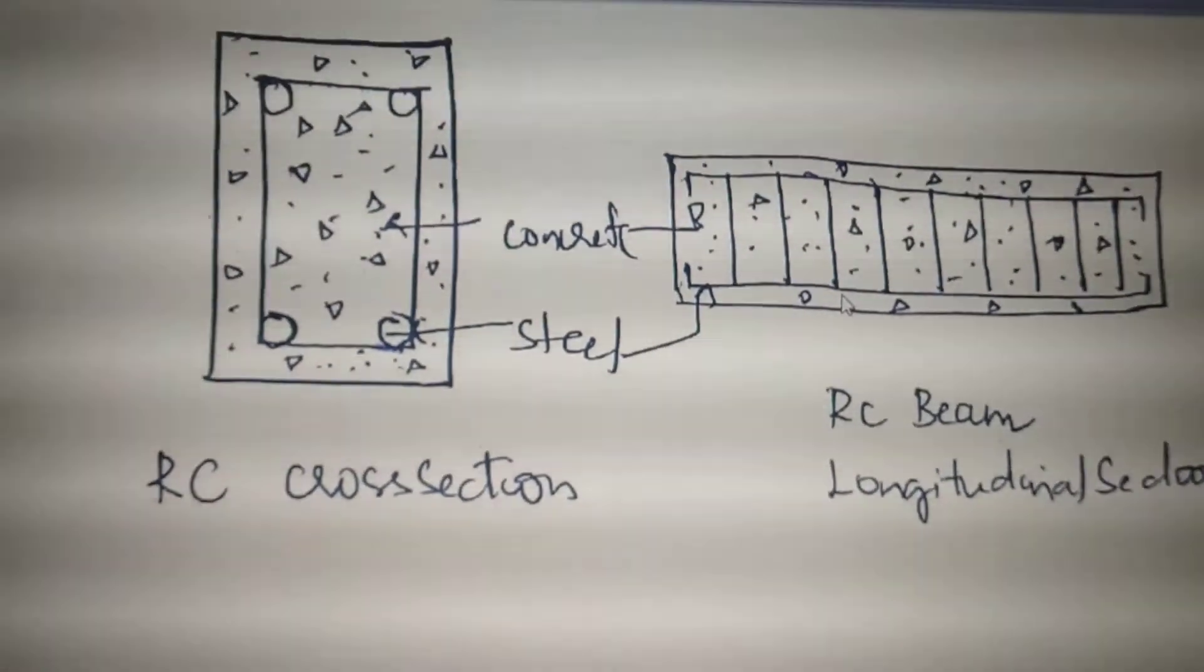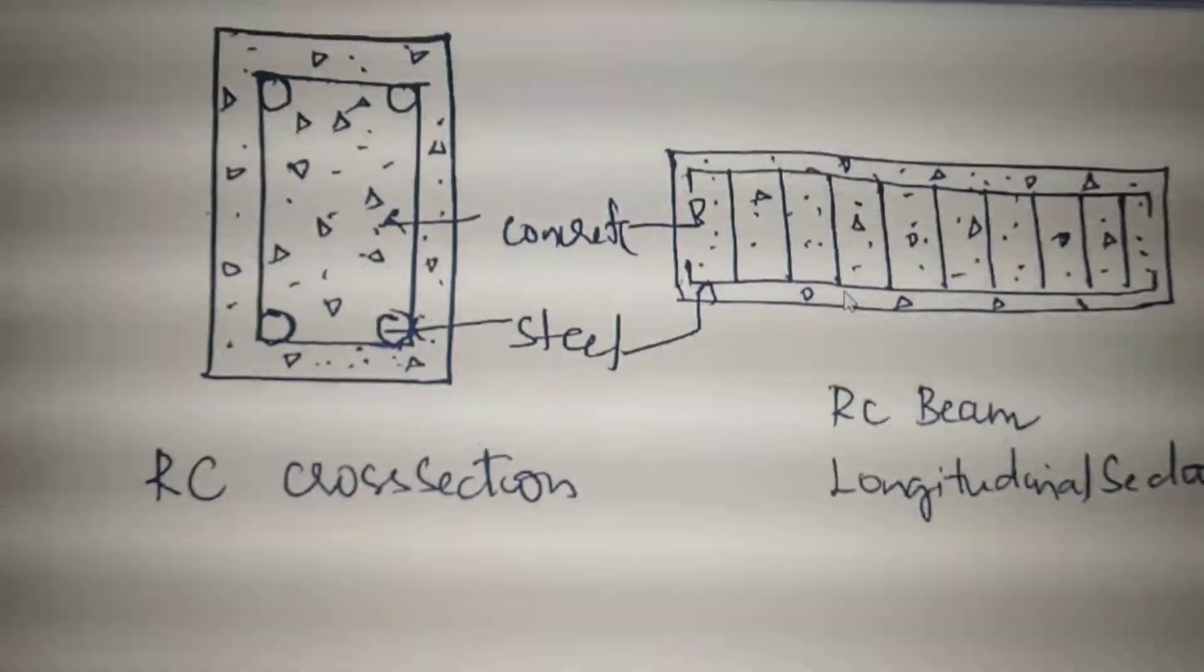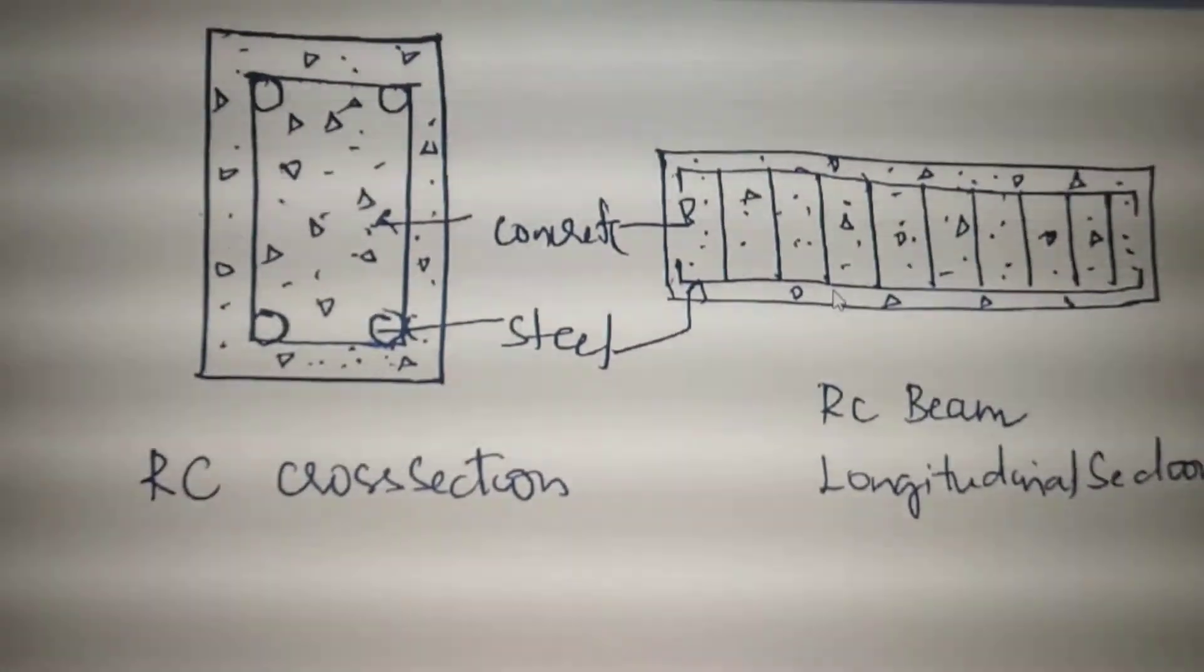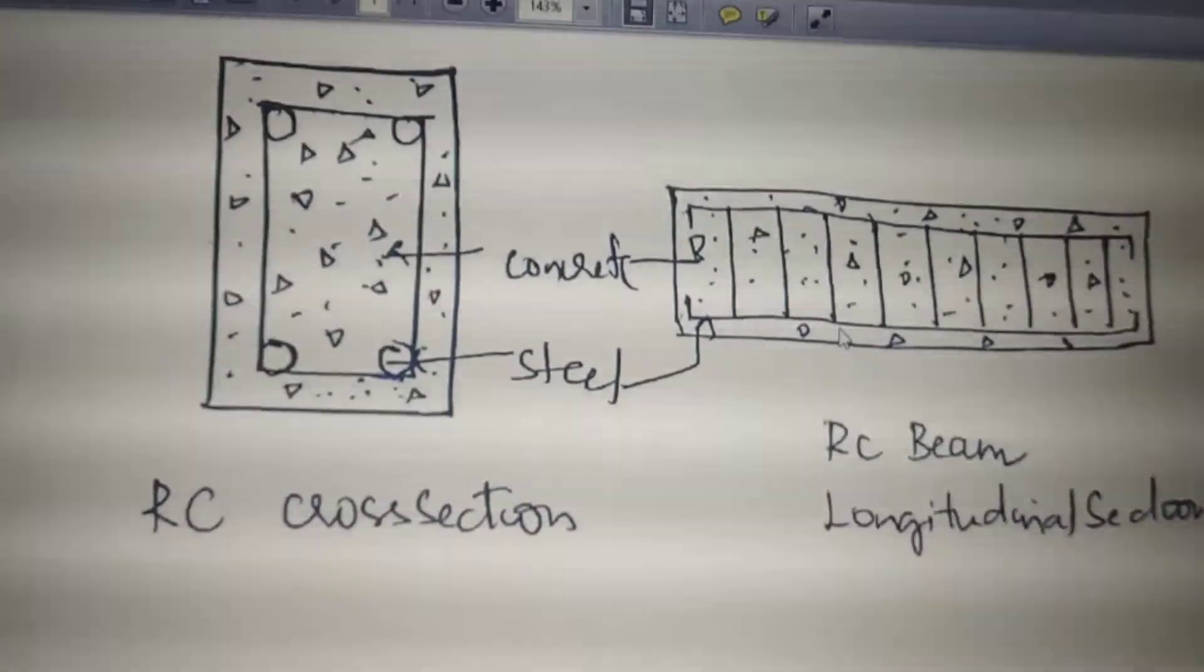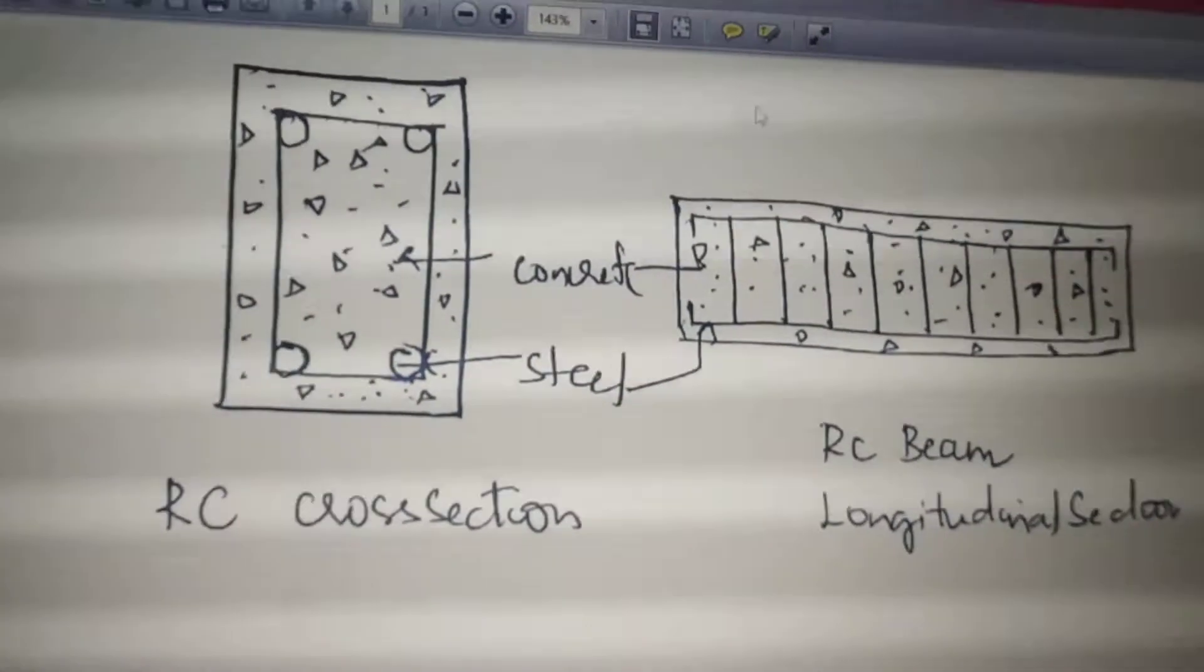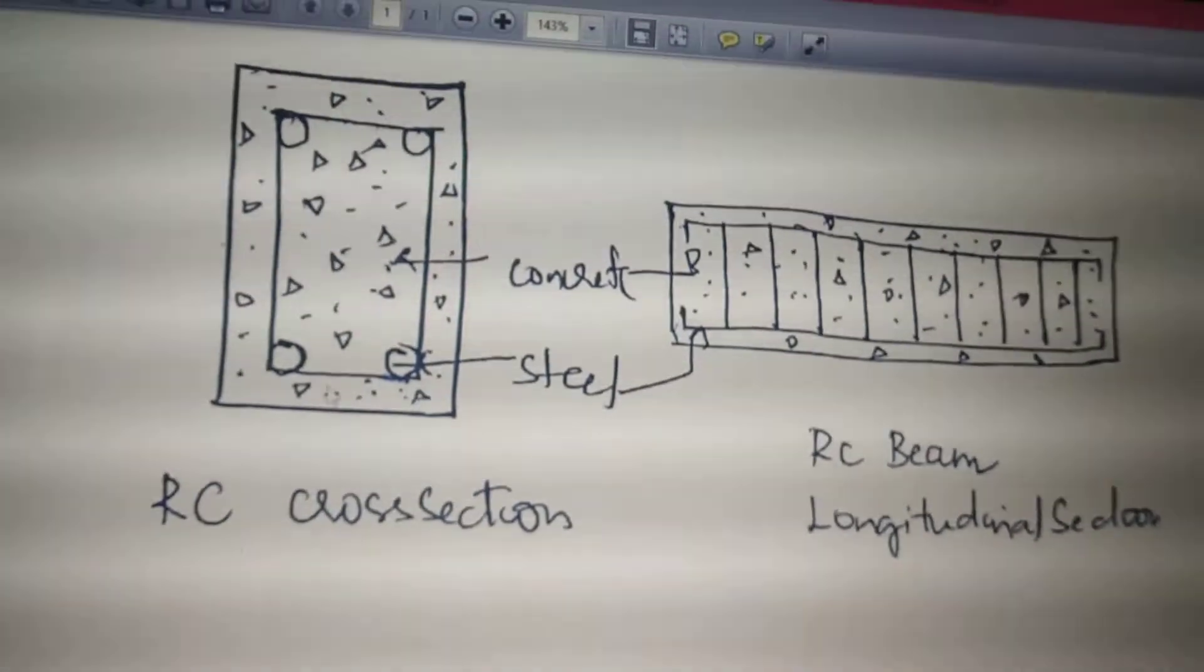In order to improve all these mechanical properties, it is necessary to distribute the reinforcement uniformly throughout the cross section. Here in the case of RC, the reinforcement has been provided only in certain pockets of the cross section - in the top surface, bottom surface, that is compression zone and tension zone.